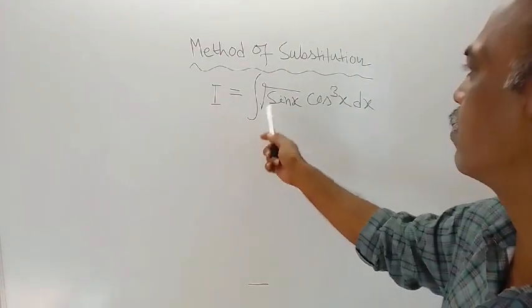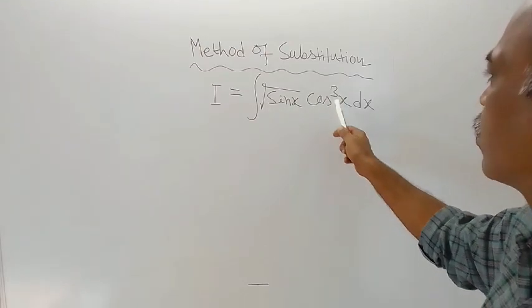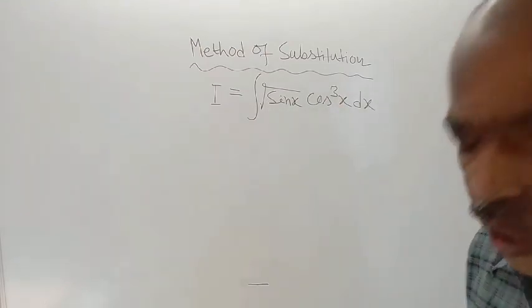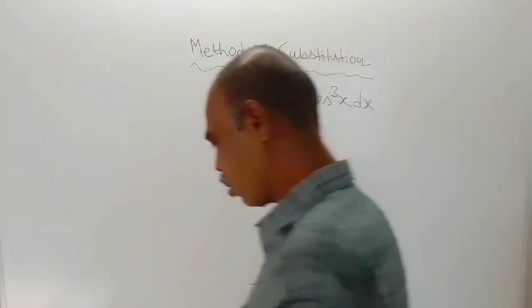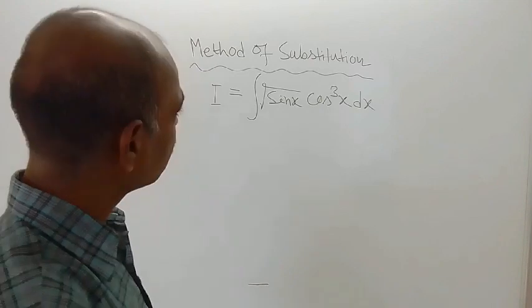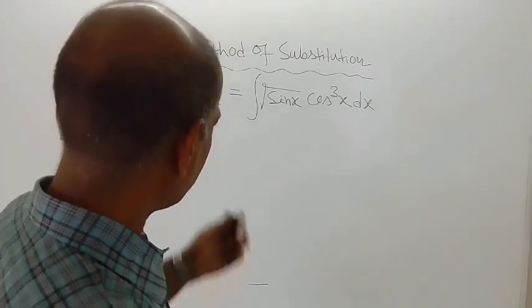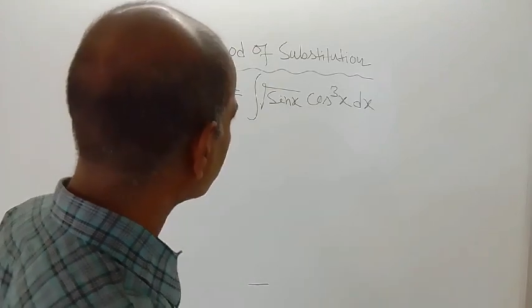Integration I is equal to integration of root over of sin x into cos cube x dx. This can be solved very easily, and substitution is also very easy.